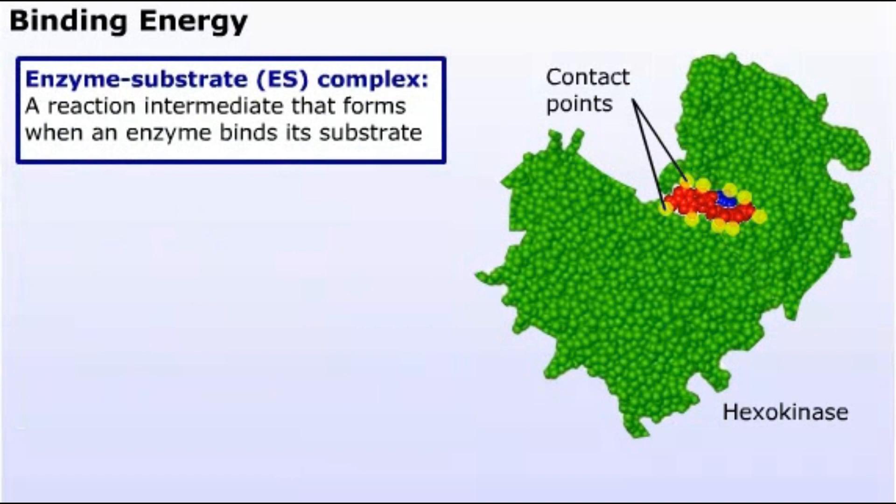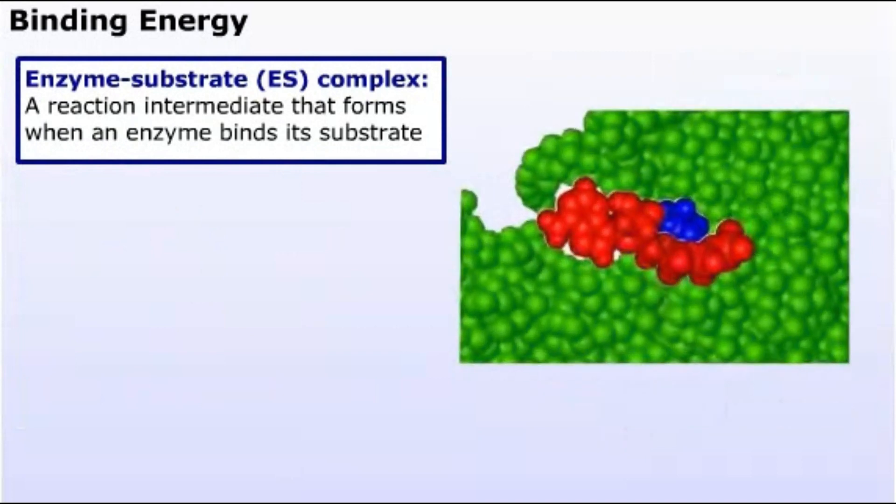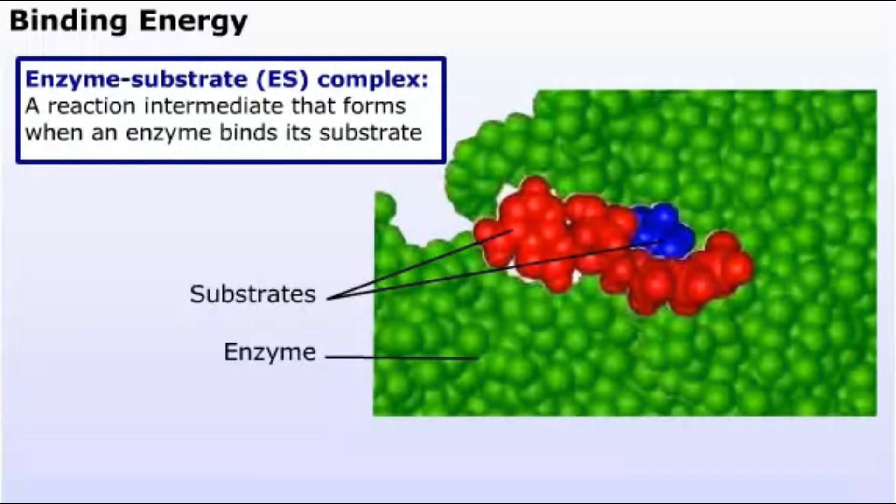The formation of the enzyme-substrate complex is the first step in an enzyme-catalyzed reaction. The enzyme holds the substrate in the proper orientation for a reaction to occur. It places the substrate near specific amino acids and cofactors that help it react.